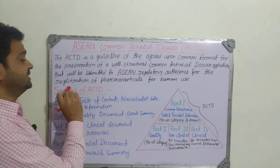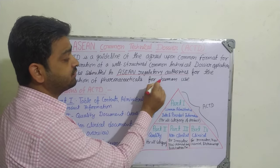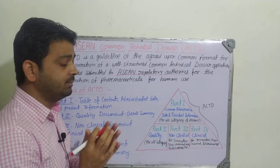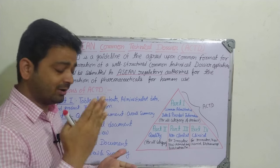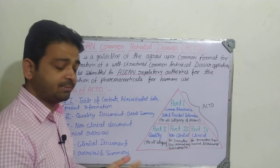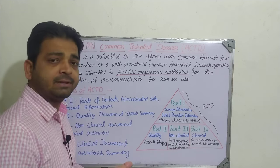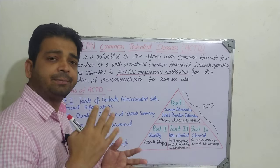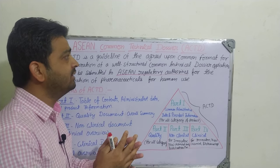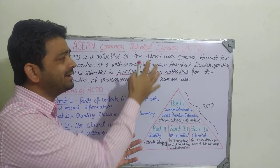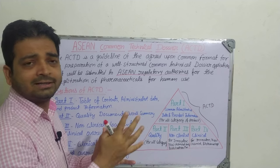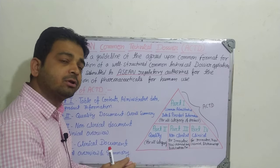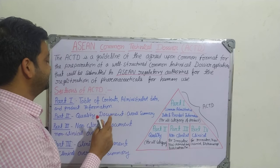For the registration of pharmaceuticals for human use, or any dosage form, any new drug, whenever it will be applied for INDA or ANDA — Investigational New Drug Application or New Drug Application — by Asian countries like Singapore, Malaysia, Thailand, India, Pakistan, they will have one common technical dozer, that is called the ASEAN Common Technical Dozer, ACTD, to apply to the particular regulatory authority.